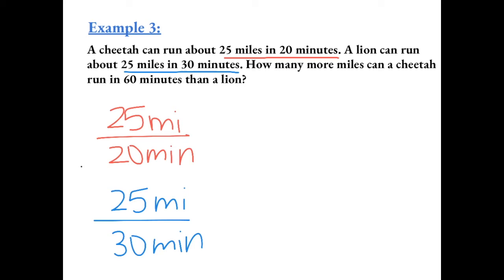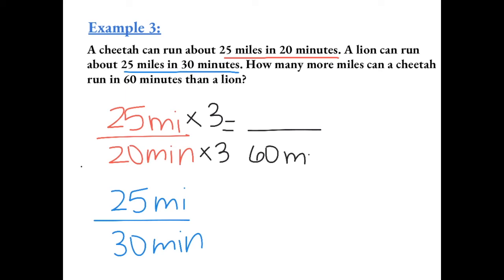If a cheetah can run 25 miles in 20 minutes, we can multiply by 3 to find how many miles it can run in 60 minutes. 20 minutes times 3 gives us 60 minutes, and 25 times 3 gives us 75 miles. So the cheetah can run 75 miles in 60 minutes.